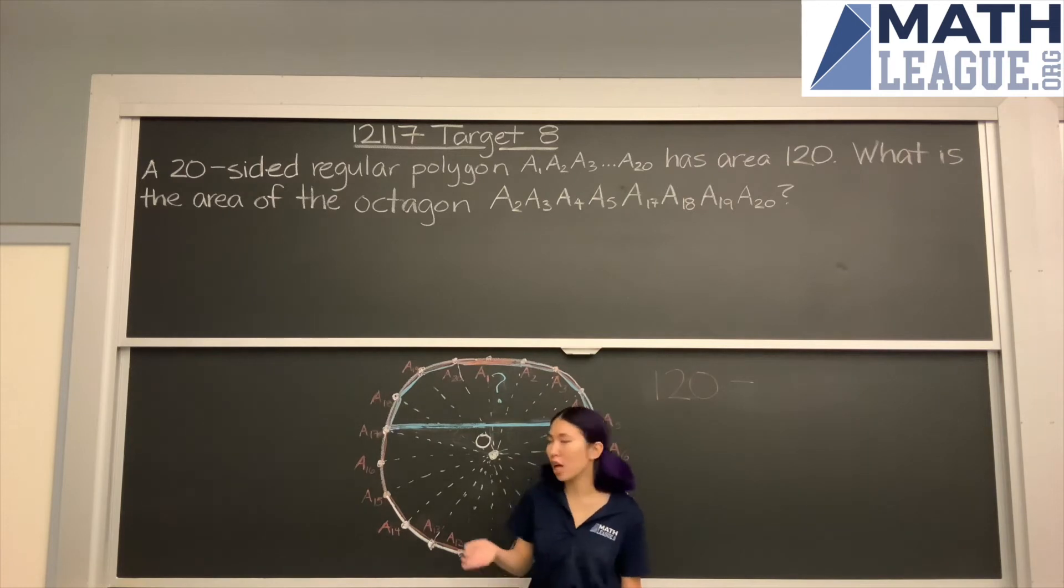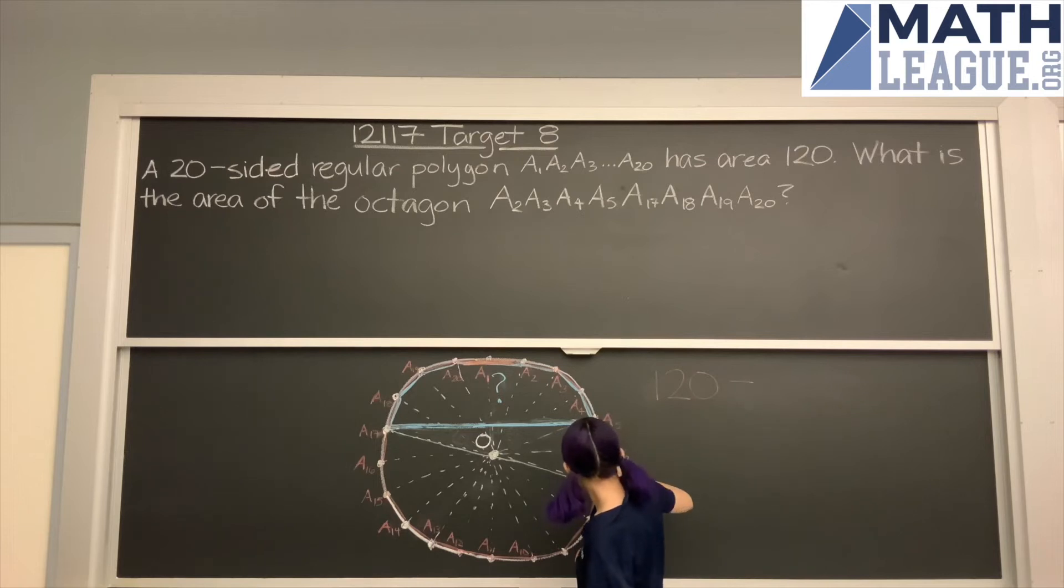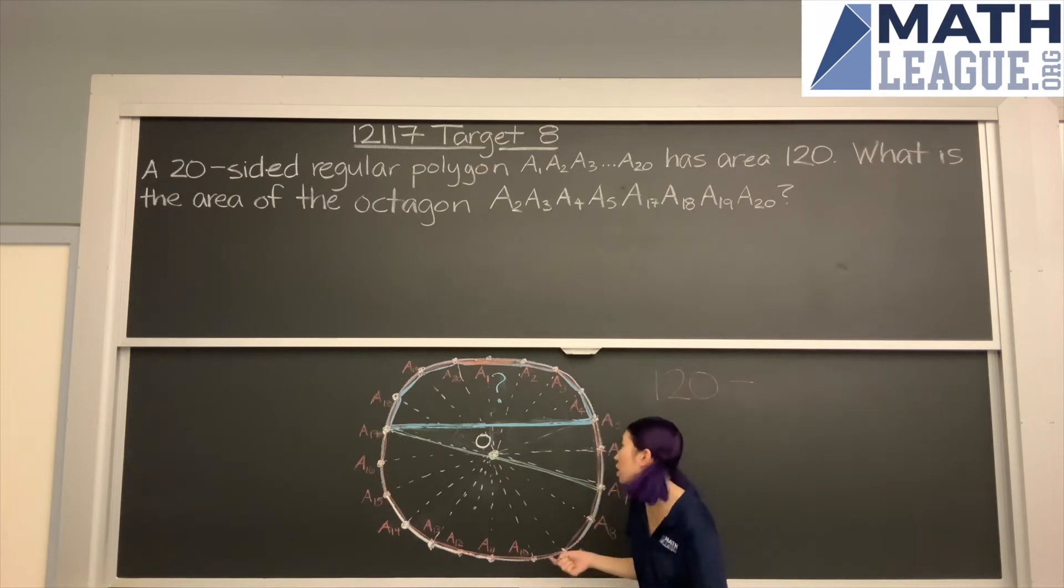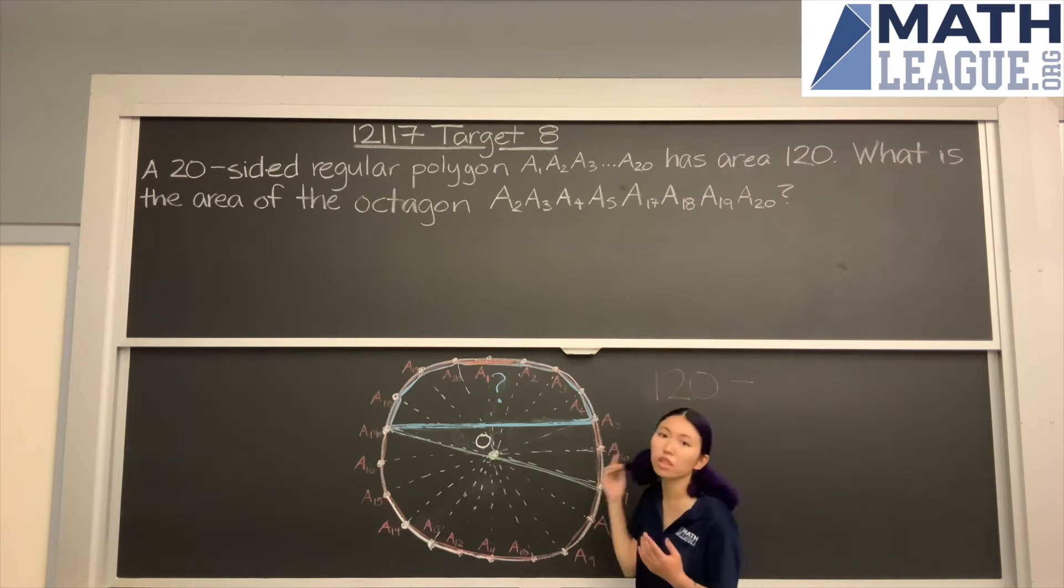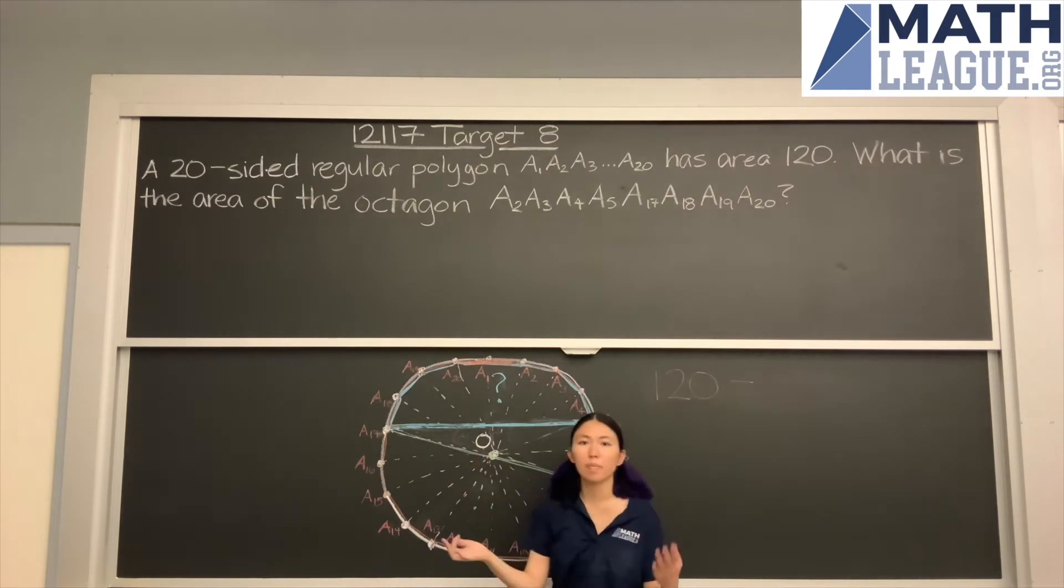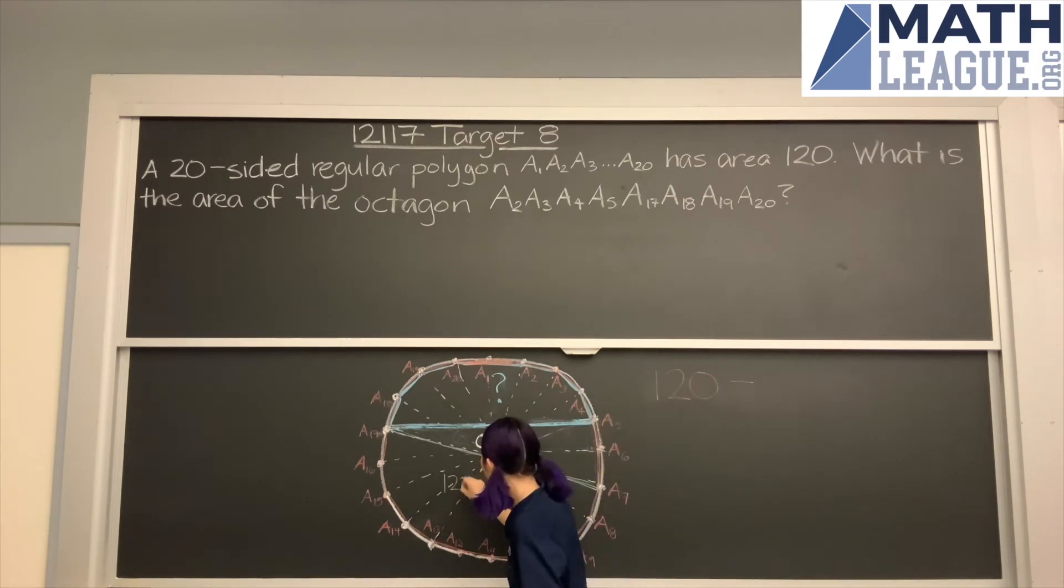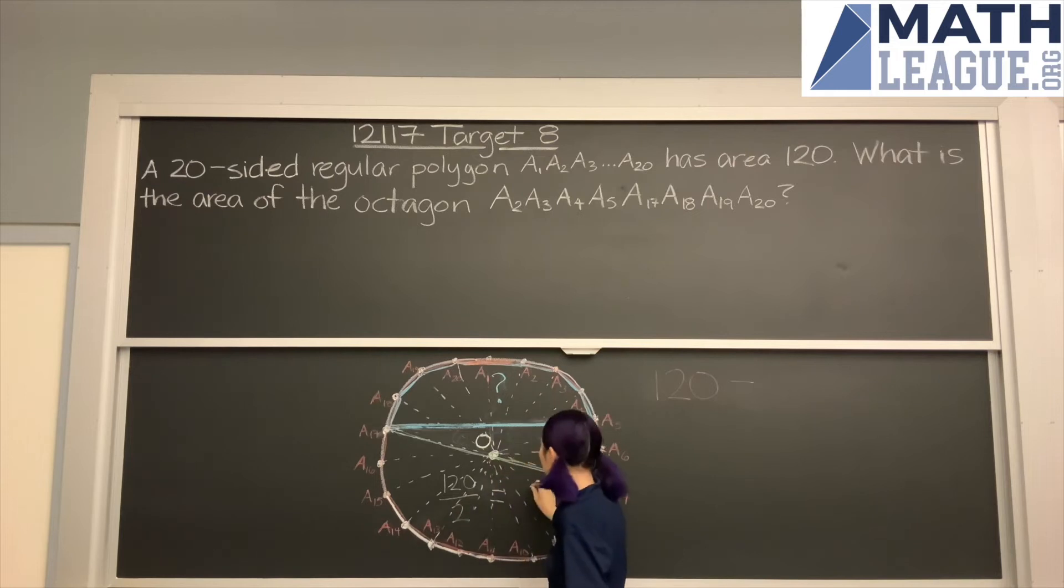So remember when I mentioned that thing about those diameters? So we can start by actually drawing one of these. We can start with A17, and I'm going to do that in green, all the way down to A7. So what I'm doing with this diameter is not just split the circle in half, but also split the 20-sided polygon in half. So that means that this area of A7 all the way up to A17, this bottom half, is area 120 divided by 2, which is equal to 60.